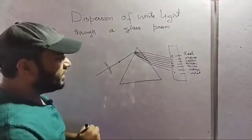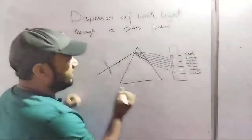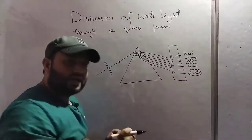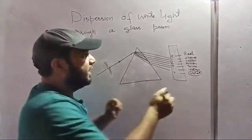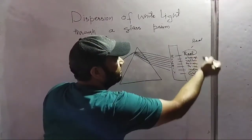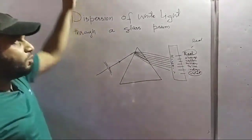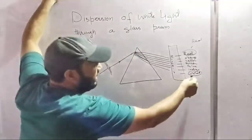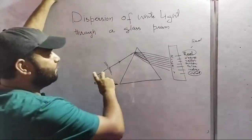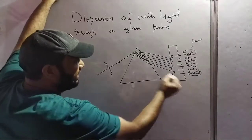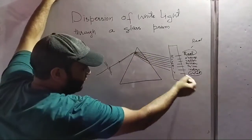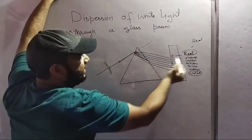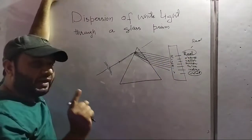Now from the figure you can clearly see the maximum deviation. Violet color ka jo hai, wo sabse zyada deviate ho gaya hai. And agar hum red color ki baat karein, that is the red color — yeh minimum deviate hua hai. This question comes in exams: why does red color deviate minimum and violet color deviate maximum? From the figure you can clearly see that violet has maximum deviation and red has minimum deviation.